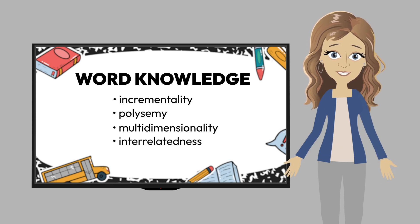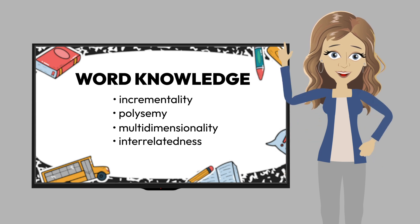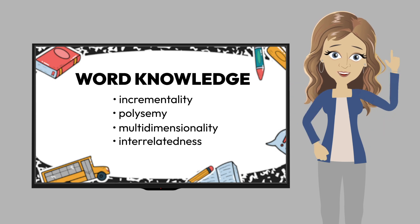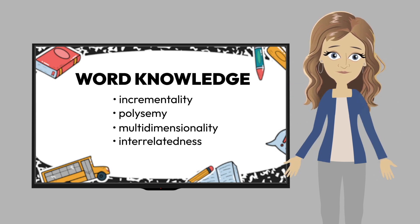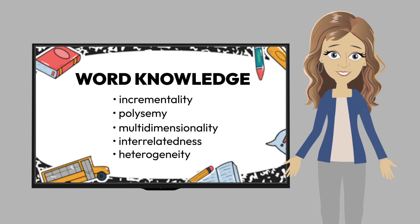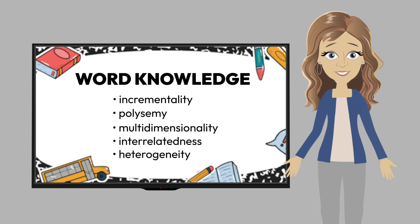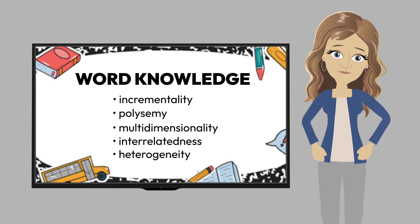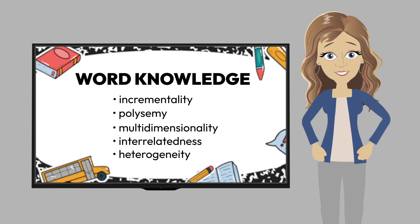Interrelatedness relates to the notion that knowing a word means knowing how the word is linked to other words — knowing the word "cat" eventually connects to "tiger," which could connect to pets and wild animals, etc. And heterogeneity means knowing what a word means based on the type of word, its function, and structure.